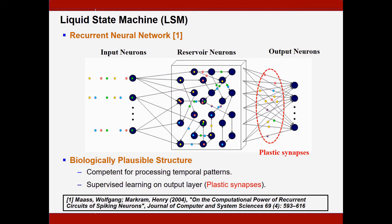The liquid-state machine has a biologically plausible structure, which makes it very competent for processing temporal patterns such as speech signals. And usually, a supervised learning is performed on the output layer, which updates the synaptic weight of the plastic synapses, which have been highlighted by the red dashed circle in this figure.